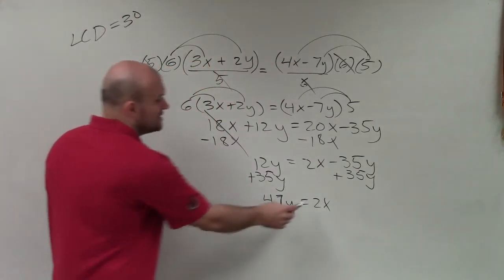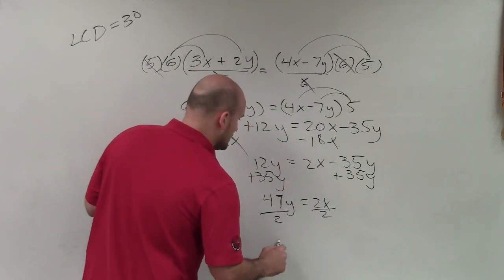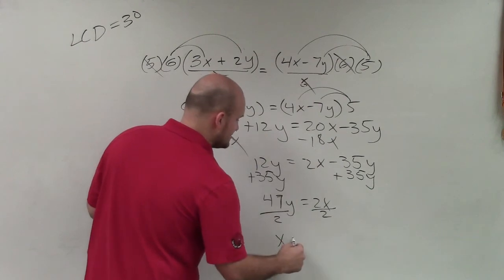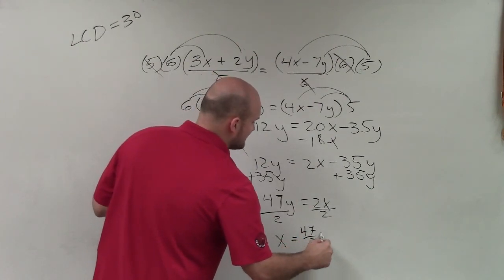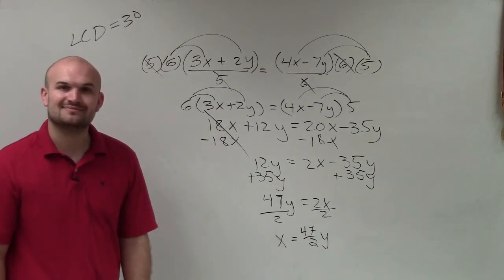Now, just to isolate x, I need to undo multiplication. So I'll divide by 2. And therefore, I'll just rewrite this: x equals 47 halves times y. And that is going to be your final answer. Thanks.